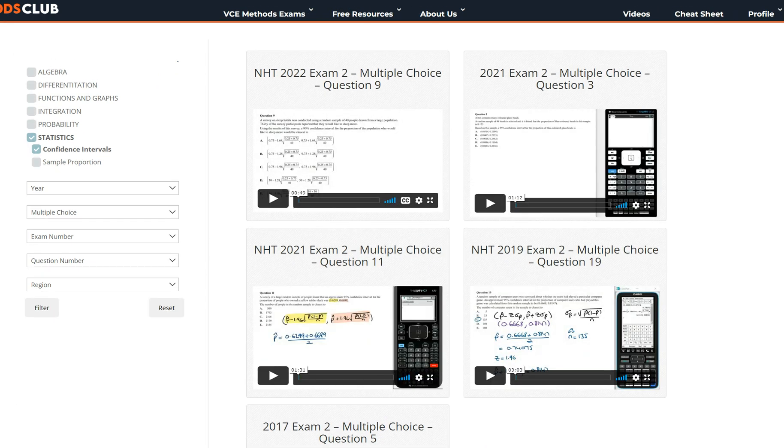This is then going to instantly group all the past Maths Methods exam questions in the multiple choice section related to just confidence intervals. See if you can do the 2021 multiple choice question 3, which was a similar question to the one we just did in this video. So hopefully you should be able to answer this question quickly and accurately.